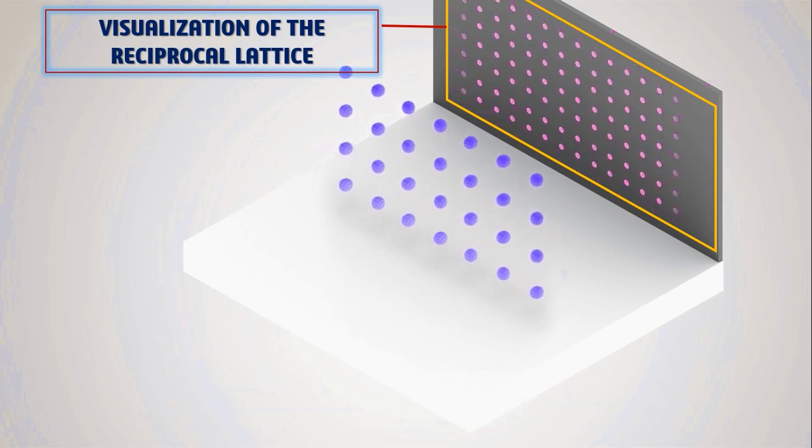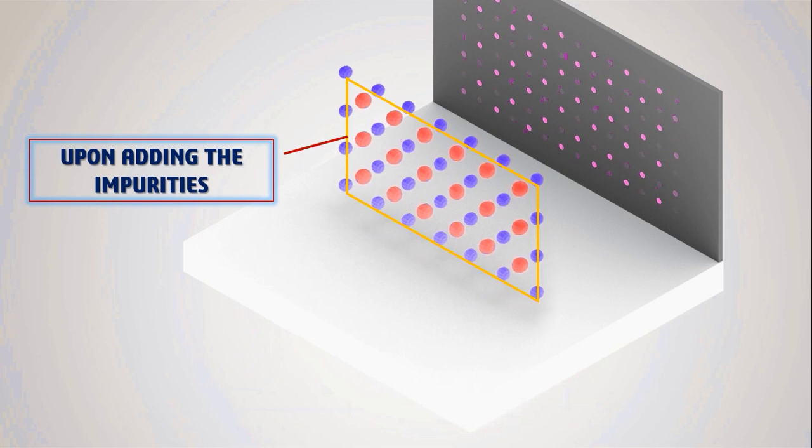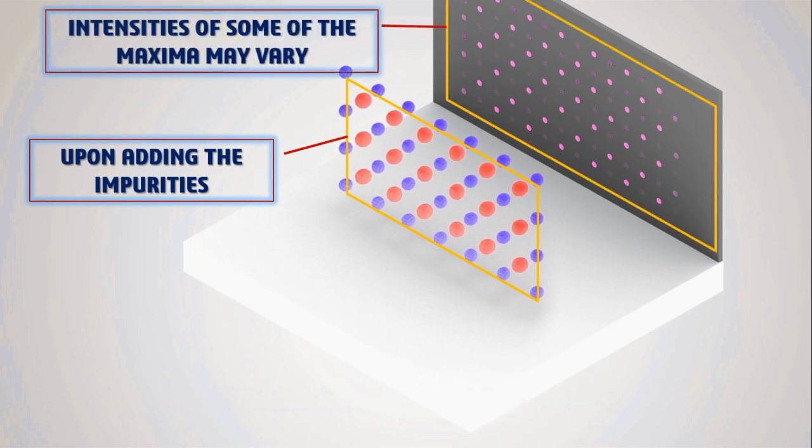Now let me give you some more information about that. If you add some impurity to that crystal structure, the diffraction pattern will still remain the same while the intensity of some of the maxima may vary.